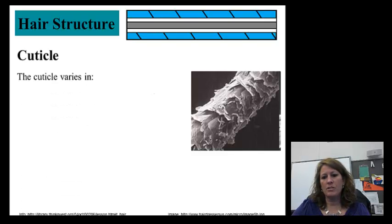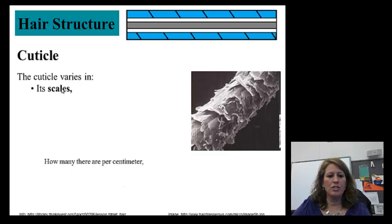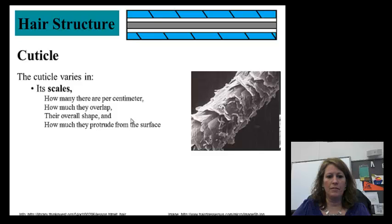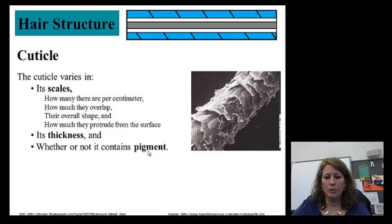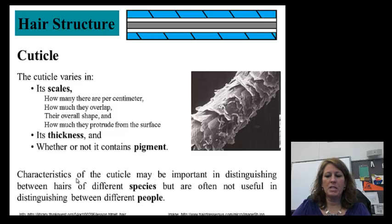Let's break this down so you can see the scales. This is under a scanning microscope. You will not see that with our digital scopes. We're looking at the cuticle, the outside. I already mentioned scales, and the scientists will actually measure how many in each centimeter, how much they overlap, the shape of the scale, and do they protrude from the surface or kind of curl up. They will also look at how thick the cuticle is and whether or not that cuticle contains any pigment. Looking at species—Caucasian, African-American, Mongoloid—all different species have different makeup or structure of the actual cuticle, so you can determine the race of an individual when you're examining hairs.